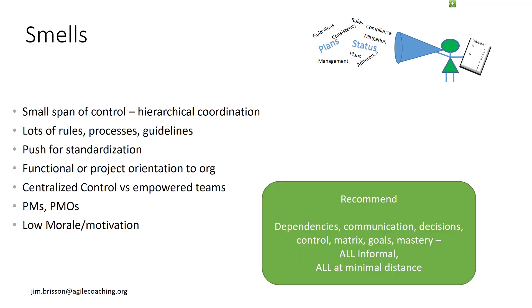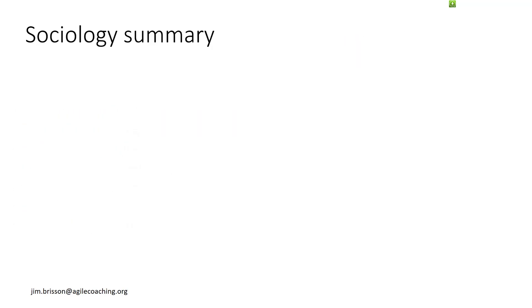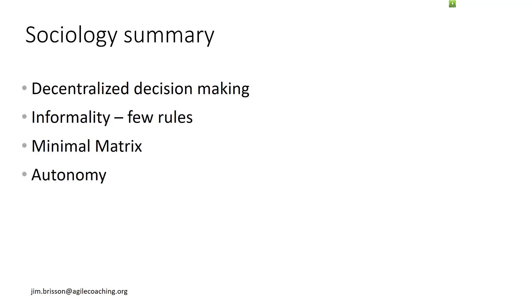So overall, we want to minimize distance to dependencies, communication, decisions, goals, and so on, so that we can have informal communication and use relationships rather than rules and make decisions quickly. So in sociology terms, if you want to be agile, you want decentralized decision making, informality with few rules and processes, a minimal matrix structure, with autonomous teams that continually focus on mastery, and where team members clearly understand the goals.